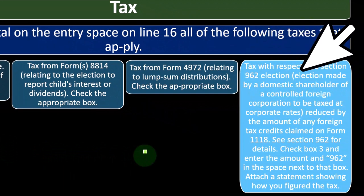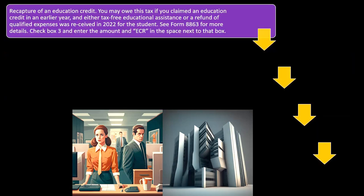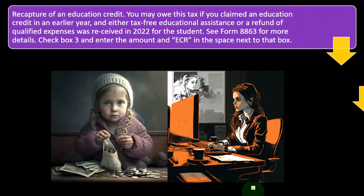Tax with respect to a section 962 election — an election made by a domestic shareholder of a controlled foreign corporation to be taxed at corporate rates, reduced by any foreign tax credits claimed on Form 1118. Check box 3 and enter the amount with '962' in the space next to the box. Also, recapture of an education credit: you may owe this tax if you claimed an education credit in an earlier year and either tax-free educational assistance or a refund of qualified expenses was received in 2022 for the student. See Form 8863 for details.